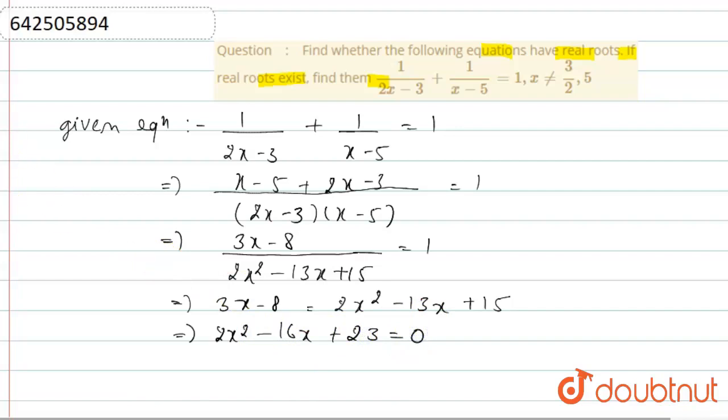To check if the given equation has real roots, we need to compare the equation with the standard equation ax square plus bx plus c equal to 0. If we compare, then we will find a equal to 2, b equal to minus 16, and c equal to 23.